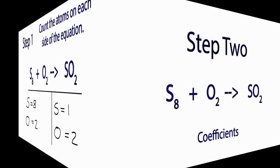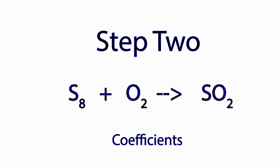Step two. The big rule for balancing equations is that we can only change the coefficients. Those are the numbers in front of the atoms. The numbers after the atoms, the subscripts, cannot be changed.